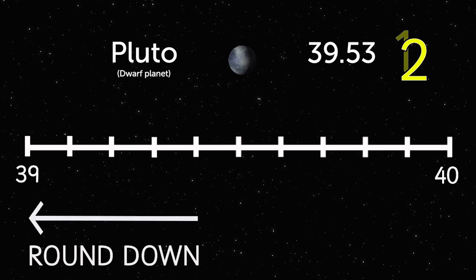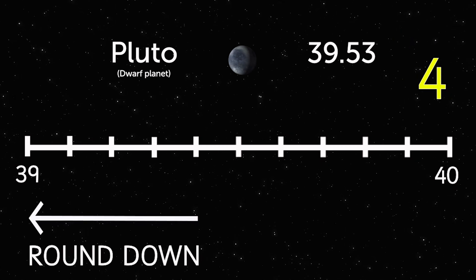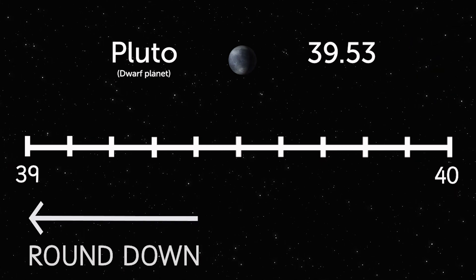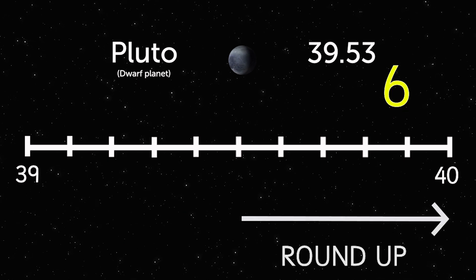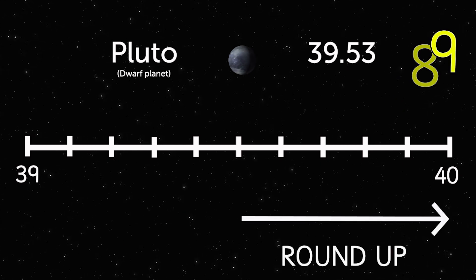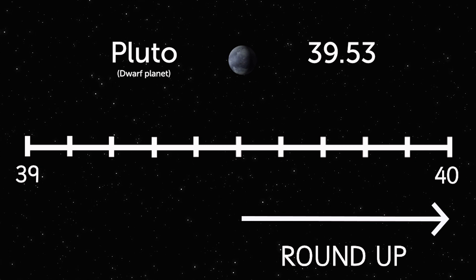If the digit is 1, 2, 3 or 4, you will round down. Or if it's 5, 6, 7, 8 or 9, you will round up.